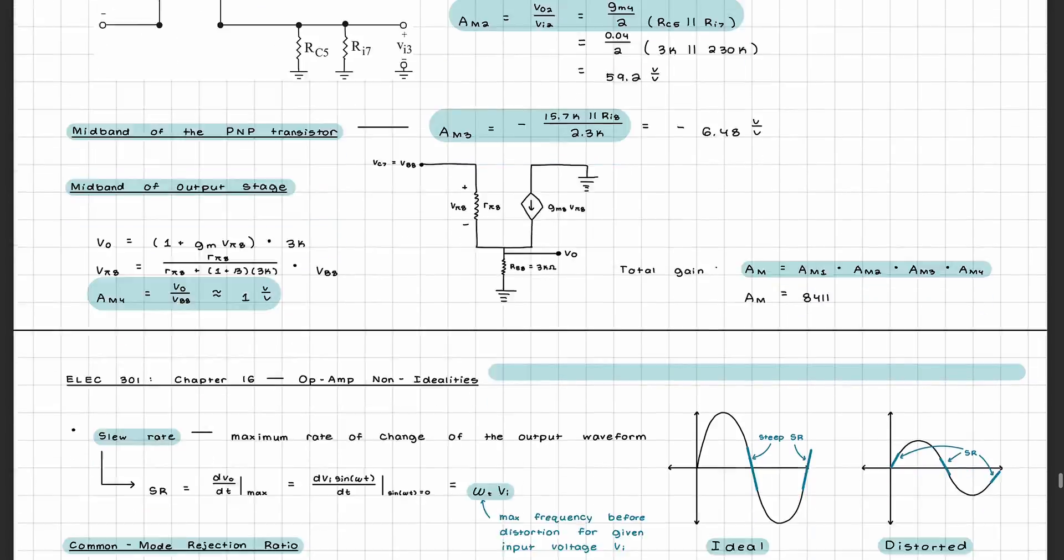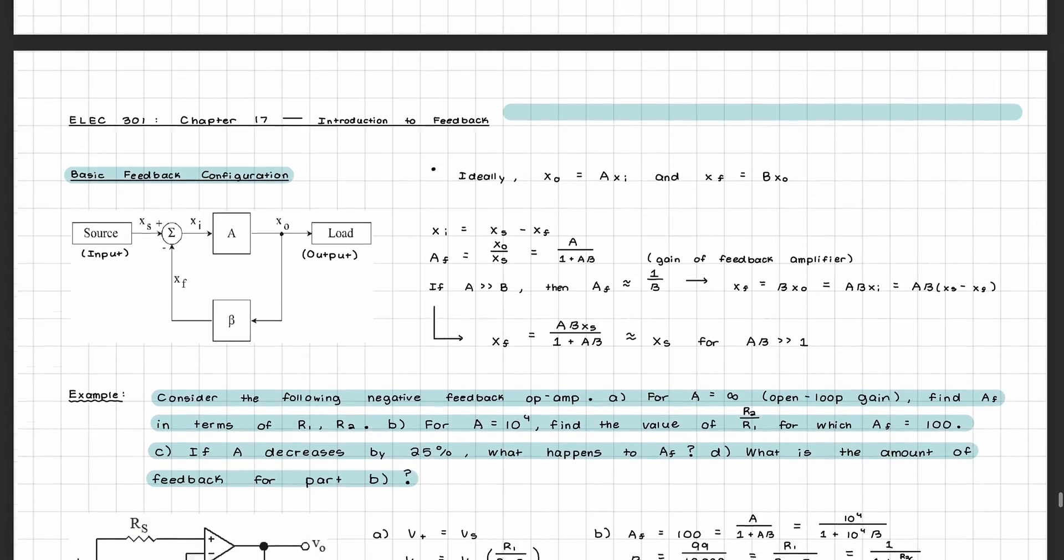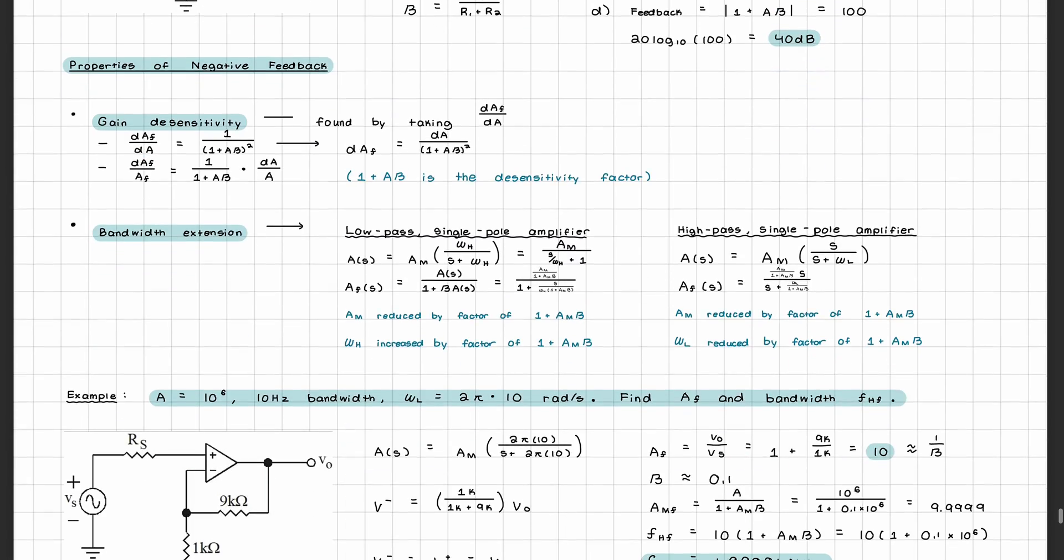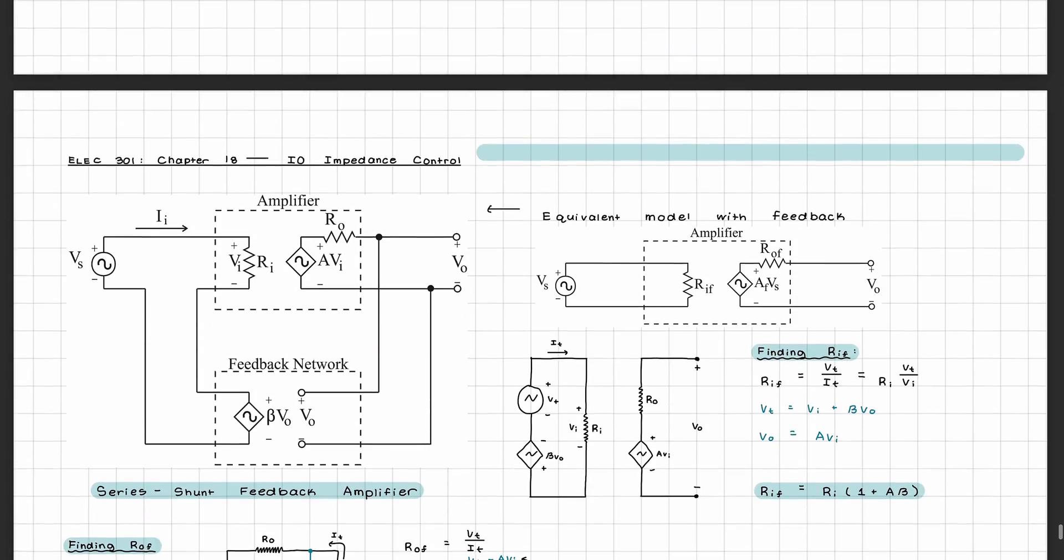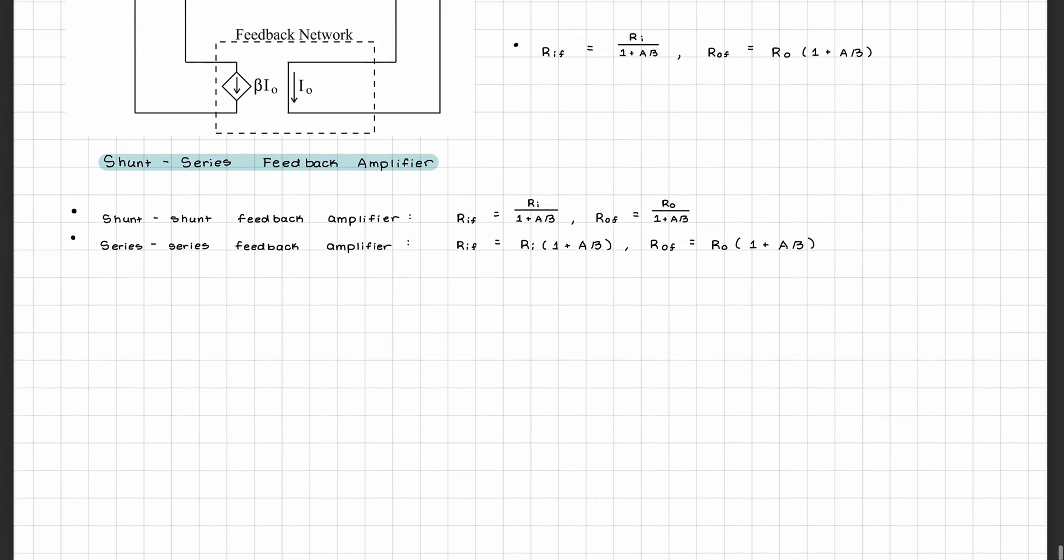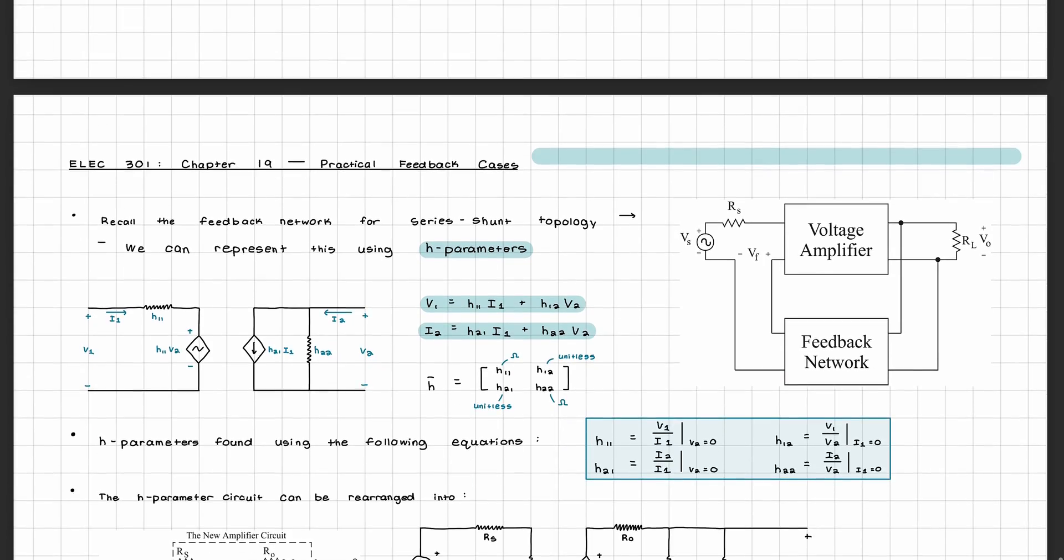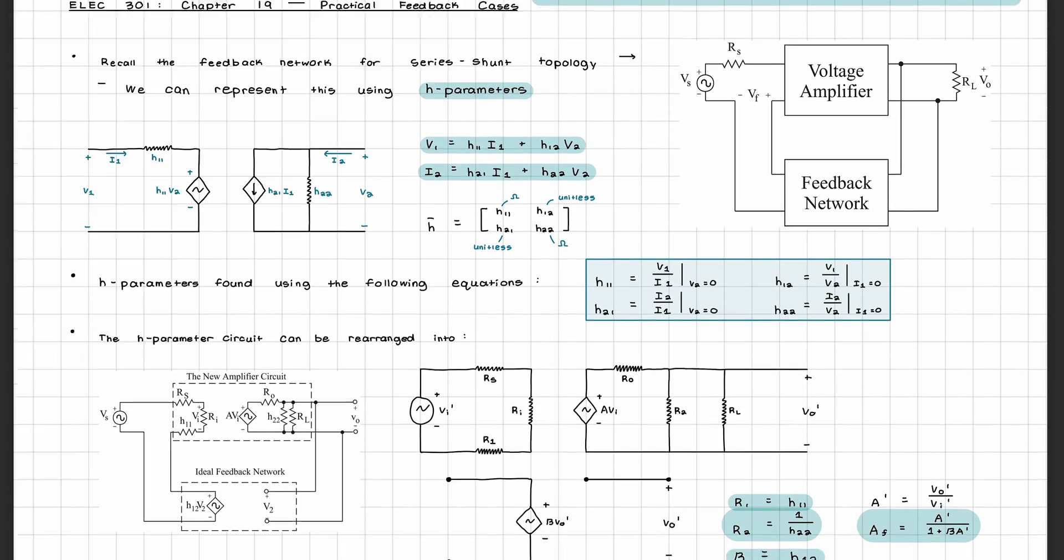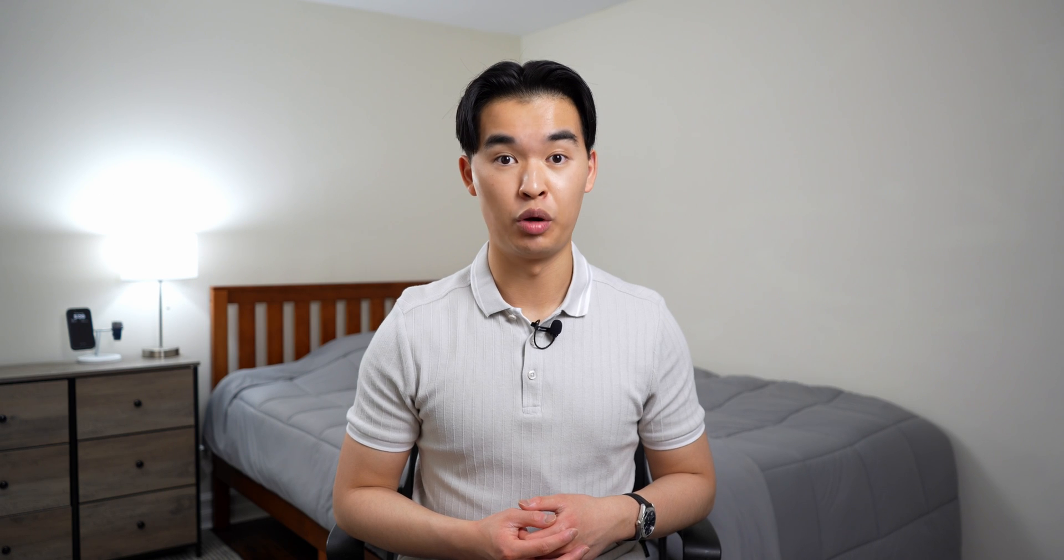And in the last unit we were introduced to feedback circuits and feedback amplifiers, the different types of feedback amplifiers to control the input output impedance, feedback topologies and the parameters associated with them, and amplifier stability. And that's pretty much everything that you're going to learn in ELEC 301.